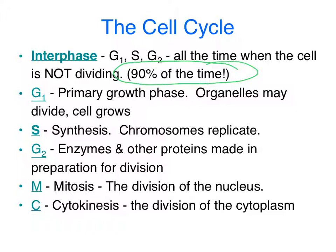Interphase has three different stages. G1 — the G stands for GAP. GAP1 is the primary growth phase of the cell, when the cell has already divided and now it's living on its own. It has all the genetic information it needs and it's producing new organelles so it can take care of all the business of being a cell.